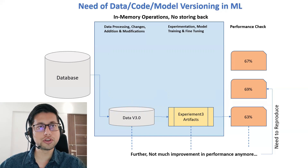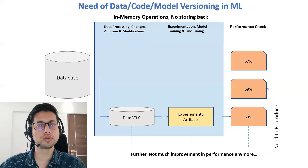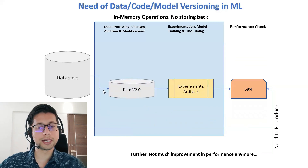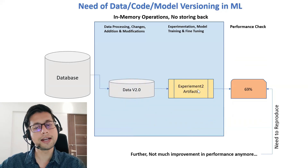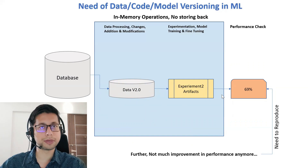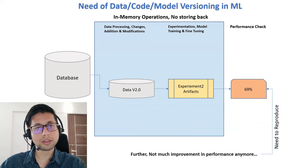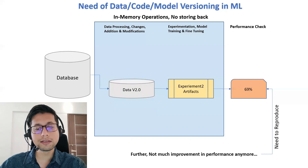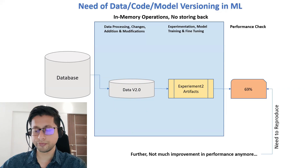There is a need to reproduce the model that gave 69% accuracy. That's where versioning comes in. If we had versioned our data and our experiments, along with the code that produces those transformations and experimentations, we would have easily reproduced that data and experiment. This step is known as reproducibility — reproducing the data or experiment. That's where data and experiment versioning arise.